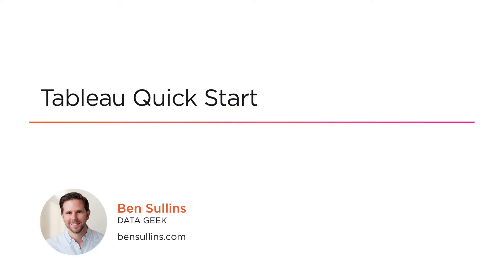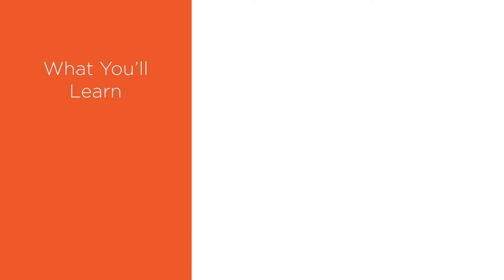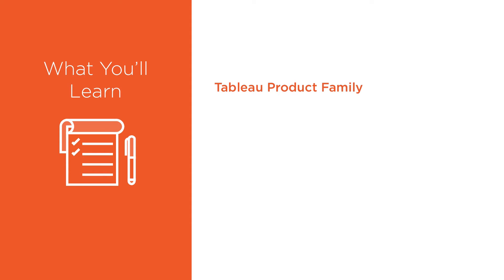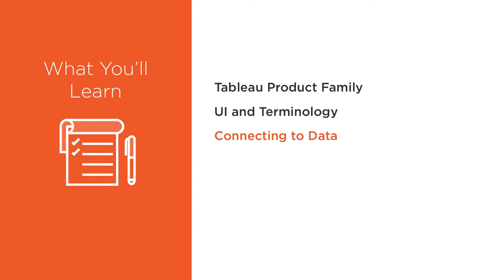Let's do an overview of our course. In this course, we're gonna talk about five different things. First, we'll take a look at the Tableau product family — we'll understand all the different pieces and how they fit together. Then we'll get into the UI and terminology — that's the user interface and the words we use to describe how to do things in Tableau. Then we'll get into actually using Tableau, connecting to some data, pulling data in and exploring it. Then we'll get into the visualization aspect — we'll actually draw some charts.